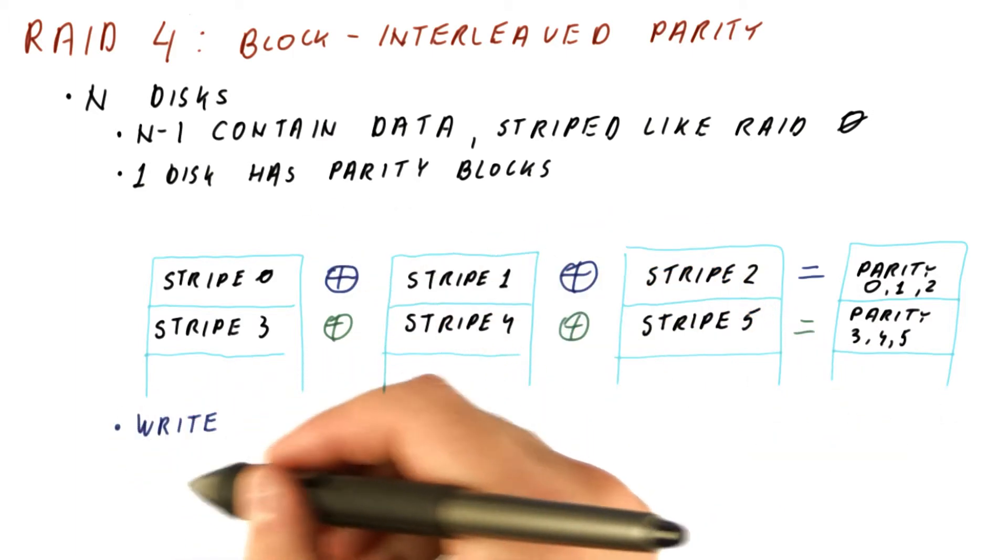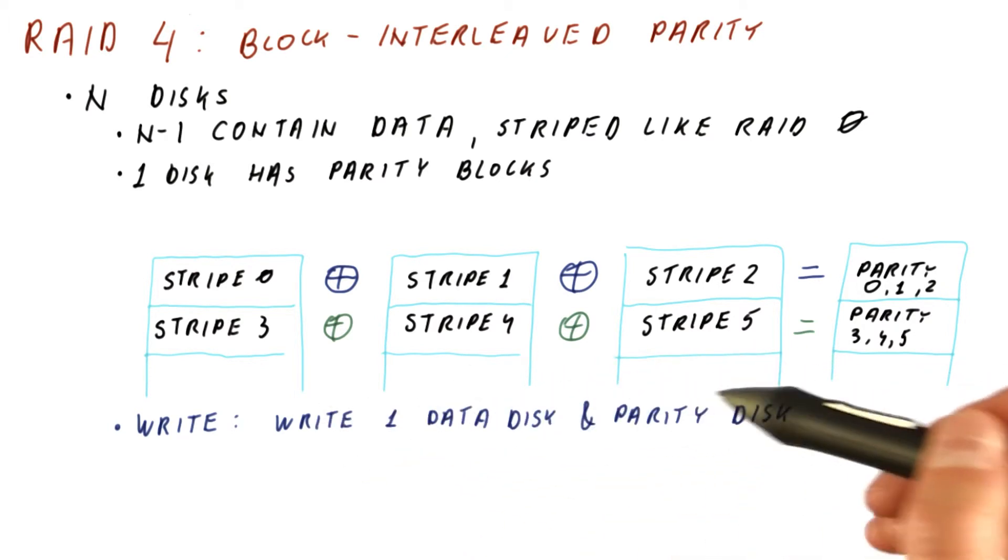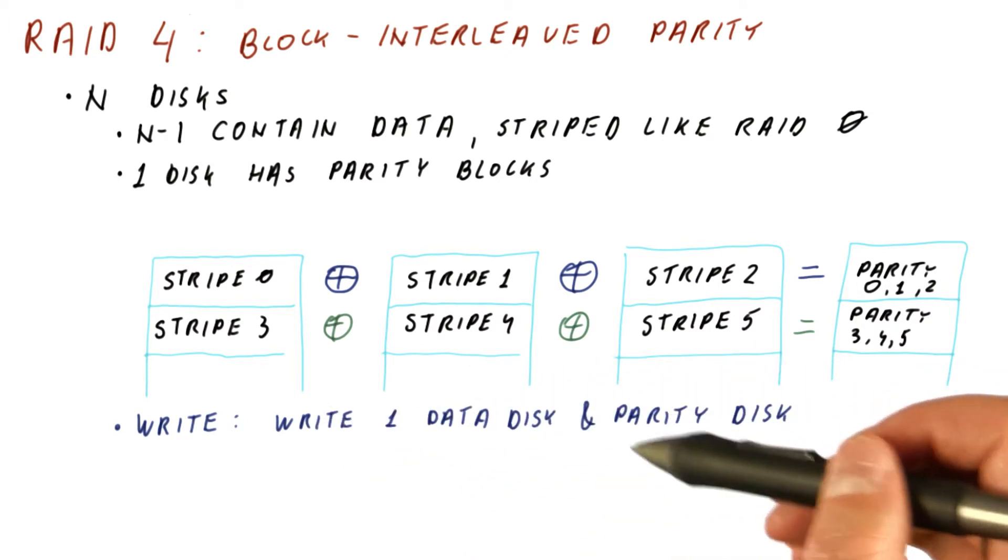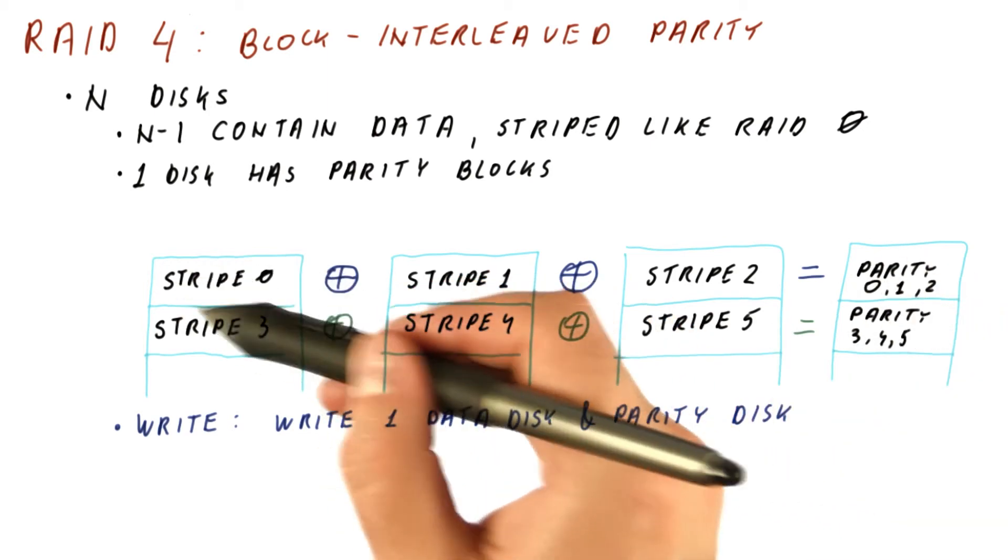So now, what does a write do? It must write one of the data disks, and it must read and write the parity disk to update the parity, because one of the stripes have changed.